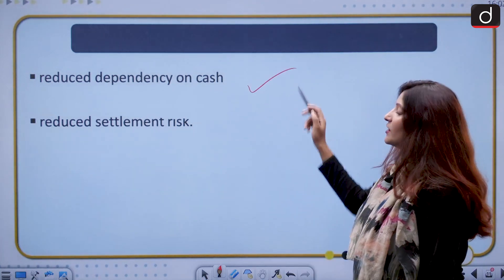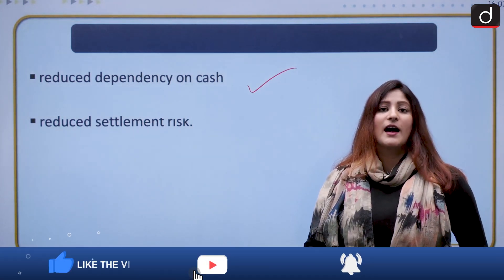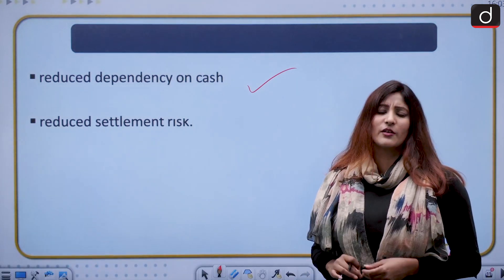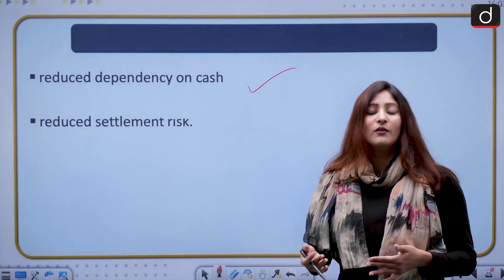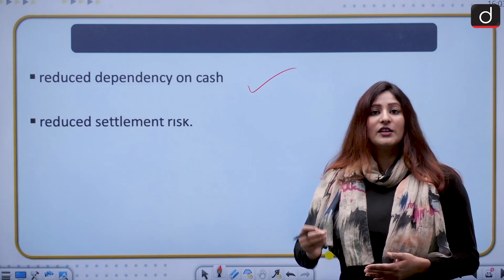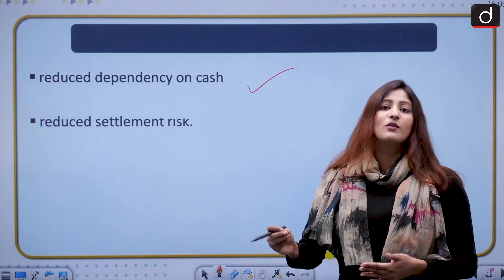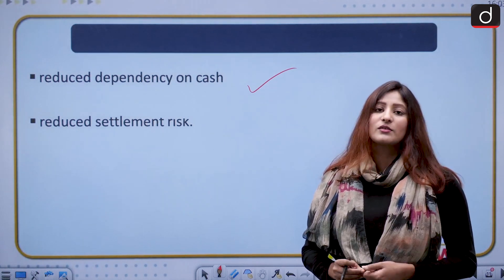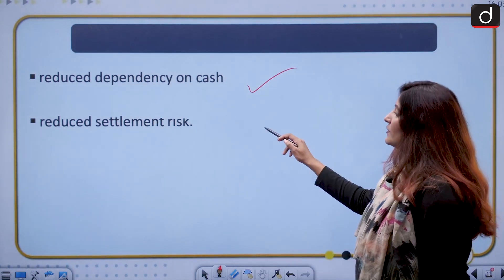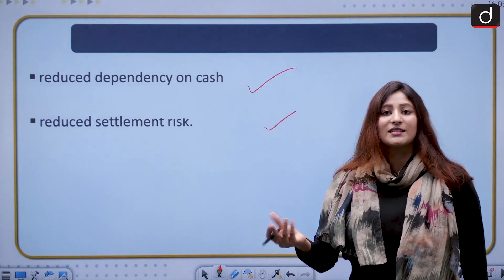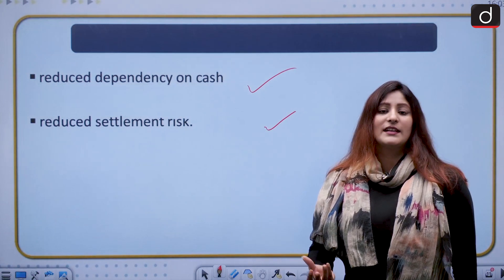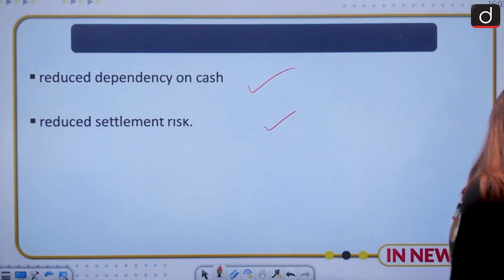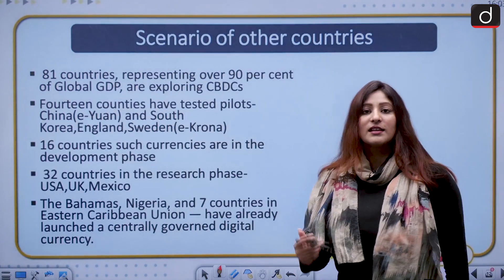Reduced dependency on cash: if digital currency becomes highly acceptable to, say, 80 percent of India's population — a hypothetical scenario — there would be reduced dependency on cash, and the money that goes into printing cash, transferring it, and the safety and risk issues involved in that would all be lessened. There is also reduced settlement risk, as sometimes checks get bounced or drafts do not get accepted in banks. Settlement risk between two or more parties becomes lessened with digital currency.